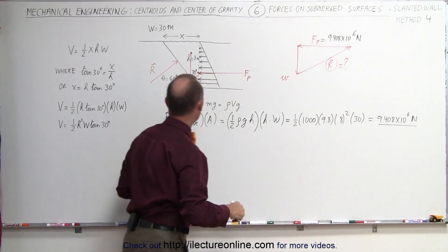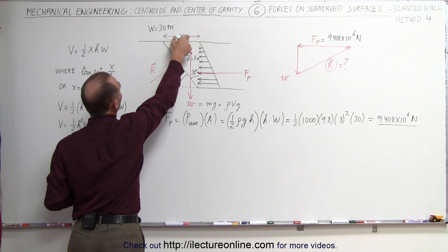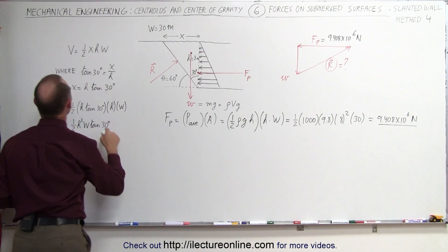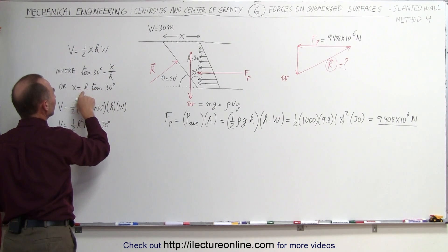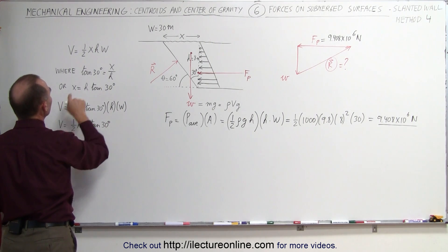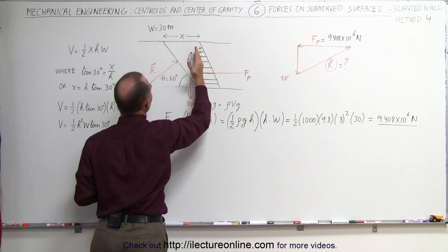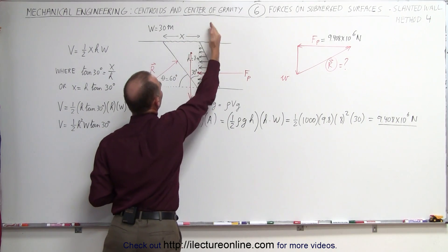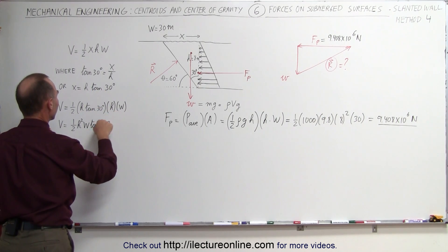Now we need to find the weight of the water. The weight is equal to mg, or rho times v times g, which means we need to find the volume. To find the volume we need to know what x is equal to. Using this triangular shape, relative to the 30-degree angle, this is the adjacent side and this is the opposite side, so the tangent of 30 degrees equals the opposite over the adjacent, meaning the opposite side equals h times tangent of 30 degrees. The volume equals one-half times x times h times w. The volume of this wedge-shaped region equals the area of the triangle — one-half base times height — multiplied by the width to get the full triangular shape. So volume equals one-half times h squared times w times tangent of 30 degrees.